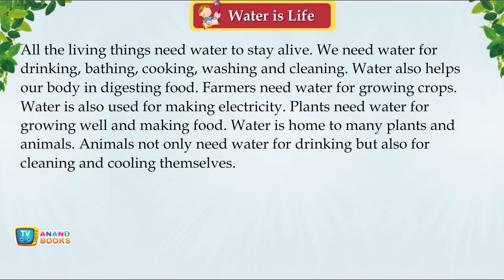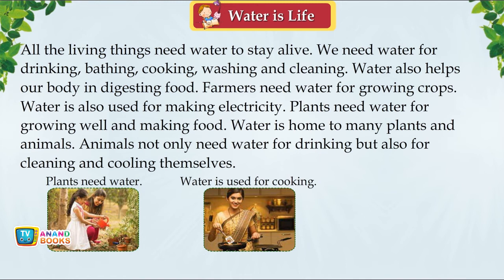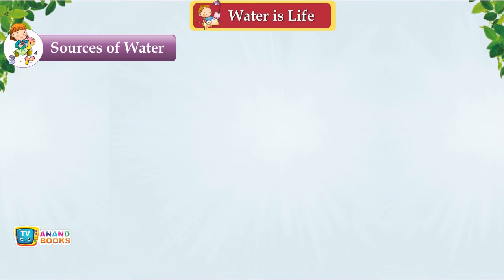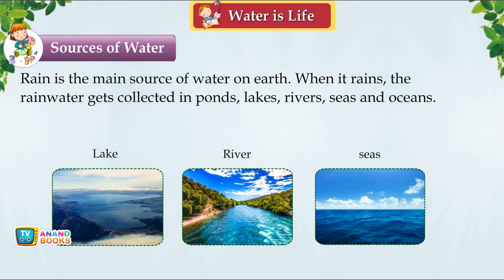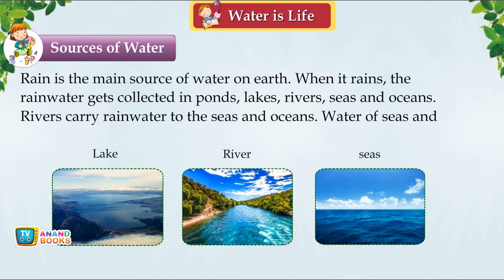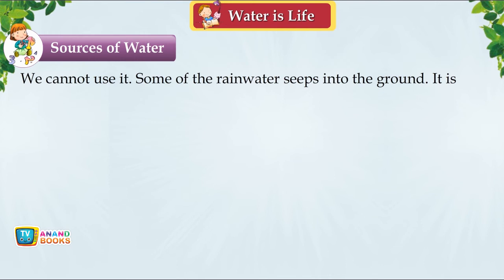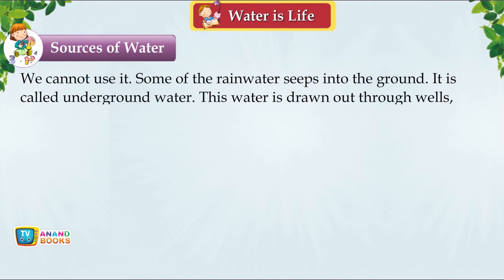Sources of Water. Rain is the main source of water on earth. When it rains, rainwater collects in ponds, lakes, rivers, seas and oceans. Rivers carry rainwater to seas and oceans. The water in seas and oceans is very salty and cannot be used. Some rainwater seeps into the ground — this is called underground water, drawn out through wells, tube wells and hand pumps.